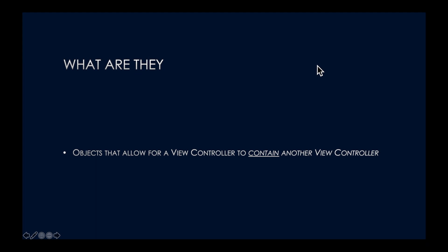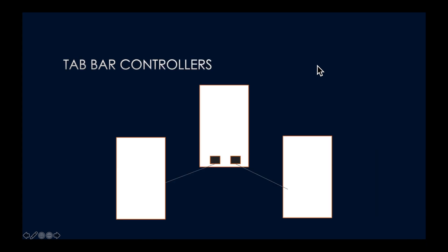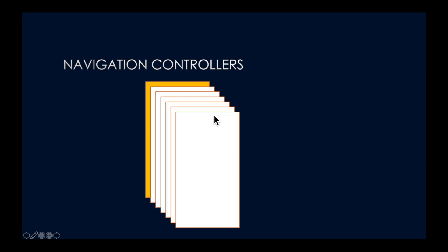Under the hood, both navigation controllers and tab bar controllers are using container view controllers, and that's exactly how Apple has implemented it. If we look at a tab bar controller, essentially this controller has both controllers tied to the tabs as child controllers — they're linked through container view controllers. For navigation controllers, it's the same deal. We have the main view controller and we basically use a container view controller to show a stack. We don't have to implement this ourselves since Apple has done it under the hood, but it's a good way to explain the concept and understand what it actually entails.